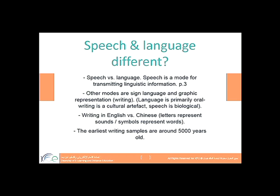That's why we have different graphemes and different systems of writing. For example, we have alphabetic languages such as English, where letters represent sounds. But in some other languages, for example Chinese, the symbols do not represent sounds — they represent words. So it's a different system of writing, written top-down rather than right-to-left or left-to-right as in Arabic or English. That's because it's a cultural artifact — different people had different ways of writing.